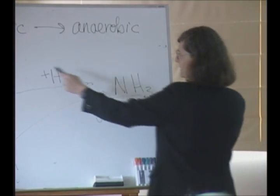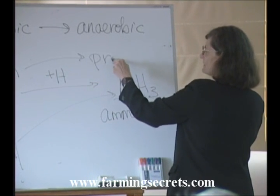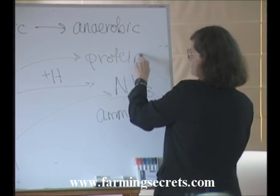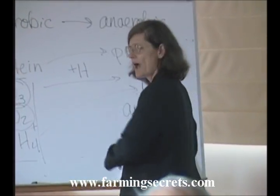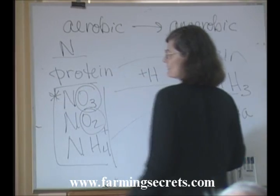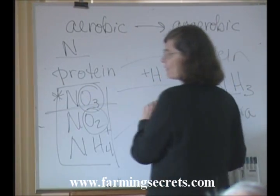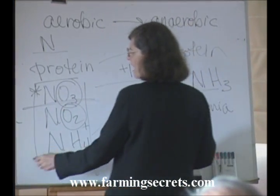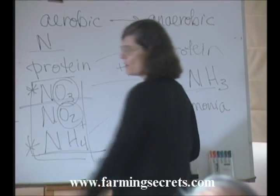Under anaerobic conditions, we also have anaerobic organisms growing. Still, the predominant form of nitrogen is in protein. Our plants have to have soluble nitrogen. So if you're an annual plant, you require nitrate. If you're a perennial plant, you require mostly ammonium.